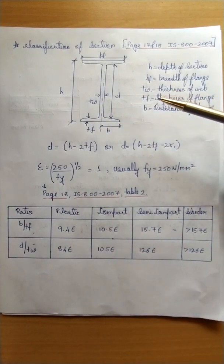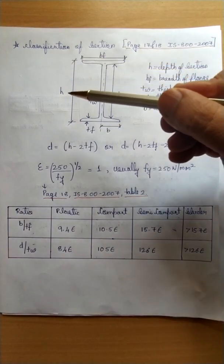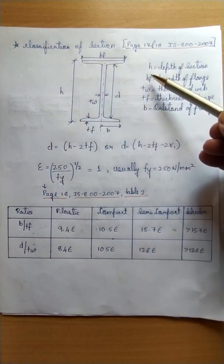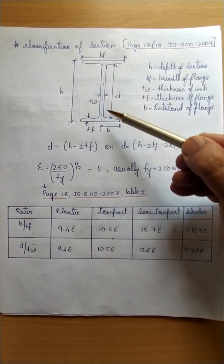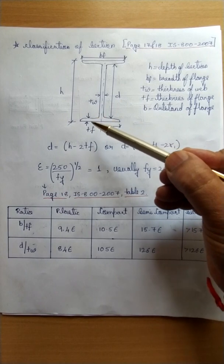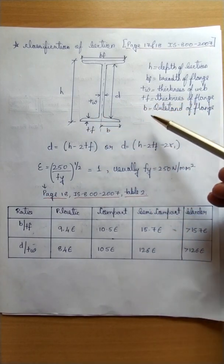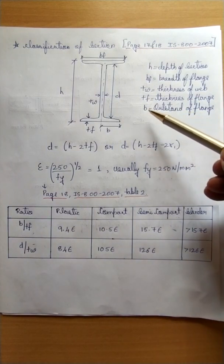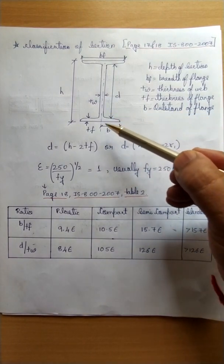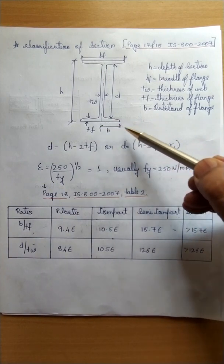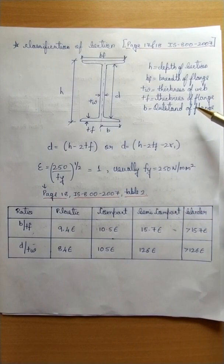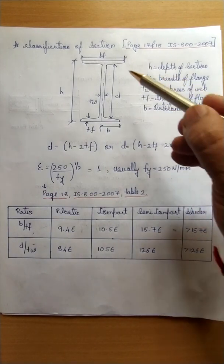For the I-section, the notations are as follows: h is the depth of the section; breadth of the flange is the width at the top and bottom; tw is the thickness of the web; tf is the thickness of the flange; and b is the outstand of the flange. The outstand of the flange is the unsupported portion — from the center, each half of the flange is the outstand. So b is the outstand of the flange, which is a very important dimension.